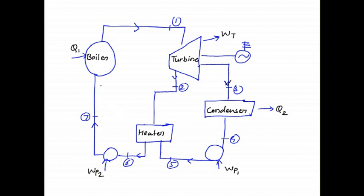The temperature of this water will increase because of the heat from the steam. So when it goes to the boiler, we need less amount of heat to heat the water again for converting it into steam. This is the concept of the regenerative cycle — when we decrease the input, we can increase the efficiency of the cycle.